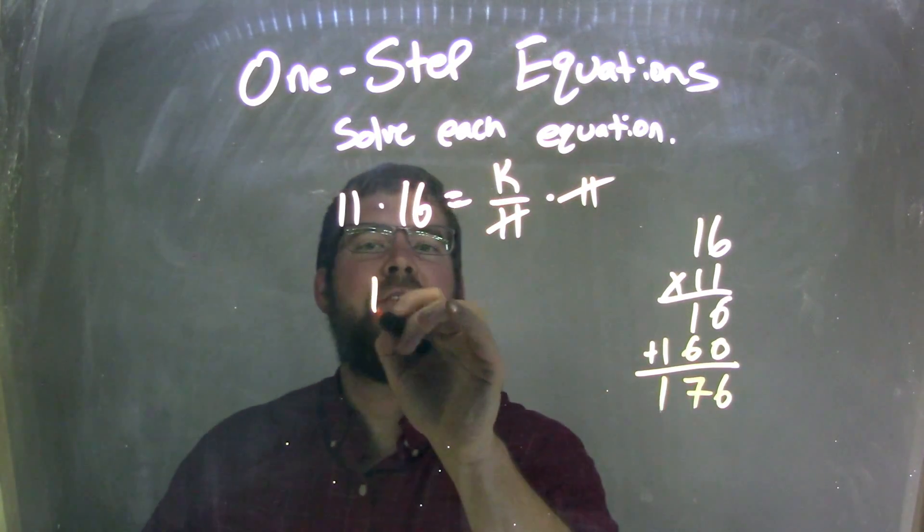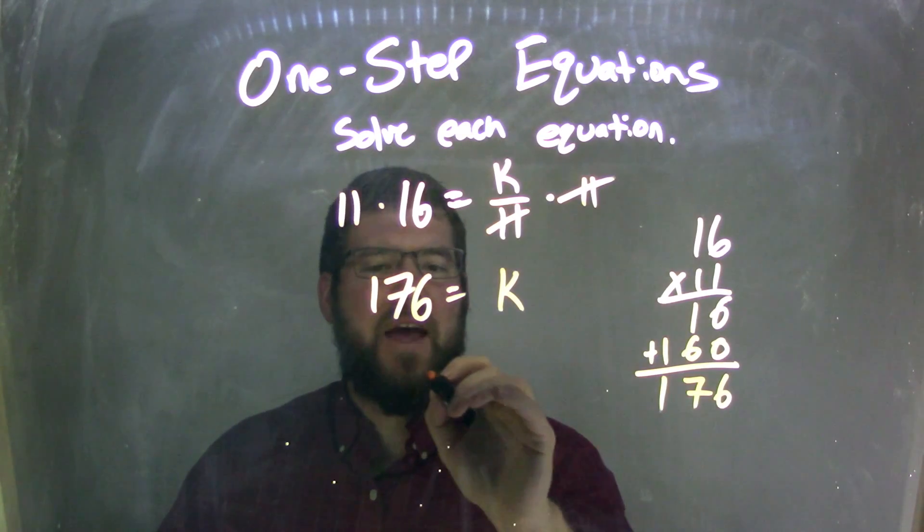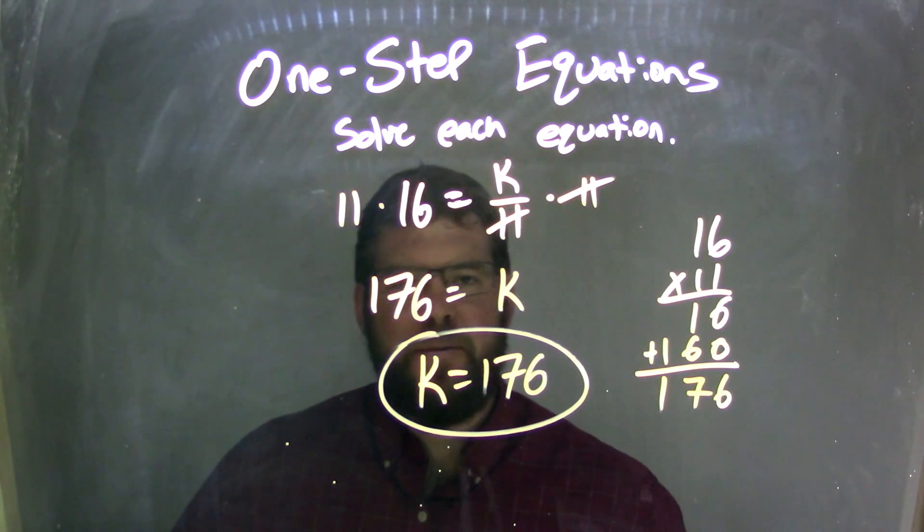Now we have 176, so we have 176 equals what's left is k. Let's rewrite that k first, k equals 176, and that is our final answer.